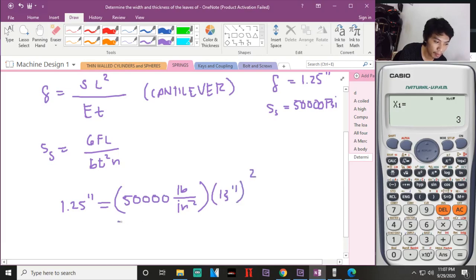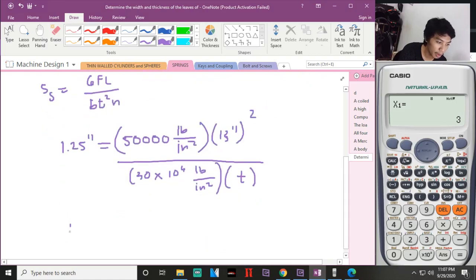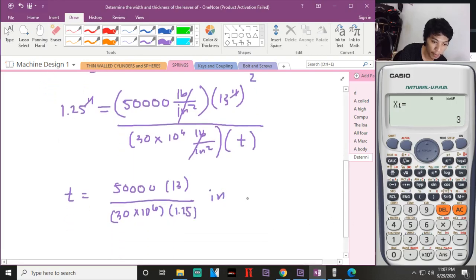E squared divided by E, that is 30,000 pounds per inch squared, then t. Okay, reform this. t will be equal to 50,000 - cancel the pounds per inch squared, cancel the pounds per inch - what remains is 1.25 times 13 over 30 times 10 to the 6 times 1.25.